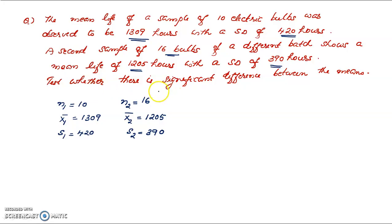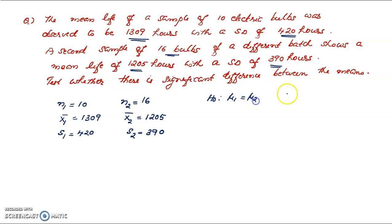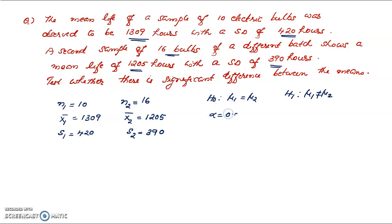We want to test whether there is any significant difference between the means of the two populations. The first population mean is mu1, the second population mean is mu2. We test H0: mu1 equal to mu2 against H1: mu1 not equal to mu2. This is the null and alternative hypothesis. We fix alpha equal to 0.05.